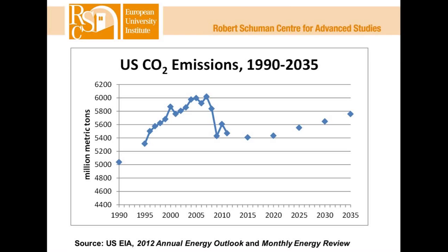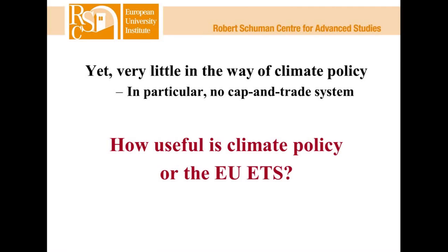Emissions fell quite significantly during the recession, and what's really surprising is that the growth seen during the preceding two decades almost seems to have stopped and flattened out. Looking at predictions now, it appears it would be well beyond 2035 before U.S. emissions would reach the 2007 peak. This raises the question of how useful is climate policy — specifically the EU ETS — given that the U.S. has very little climate policy and no cap-and-trade program such as in Europe.